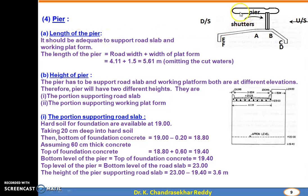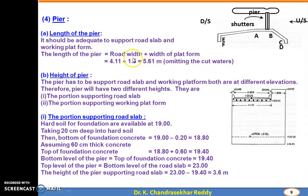Pier: the length of the pier should be adequate to support the road slab and working platform. Length of pier = road width + width of platform = 4.11 + 1.5 = 5.61 m (excluding the cut water). The cut water is the pointed upstream end of the pier. The pier has two heights: one below the road slab and another below the working platform. Hard soil for foundation is available at 19.00. Taking 20 cm into hard soil, bottom of foundation concrete = 19 − 0.20 = 18.80. Assuming 60 cm thickness of concrete, top of foundation concrete = 19.40. Bottom level of pier = 19.40. Top level of pier (road slab support) = 23.00. Height of pier supporting road slab = 23.00 − 19.40 = 3.60 m.